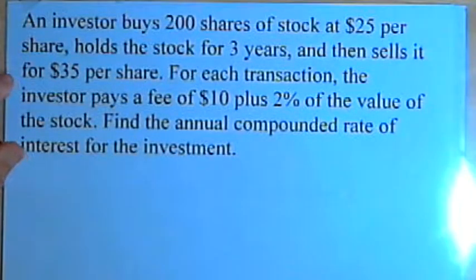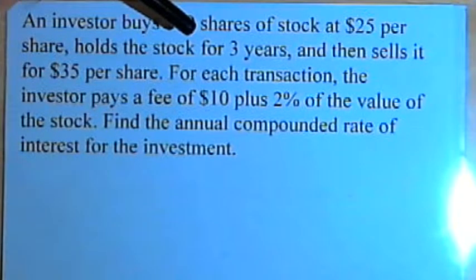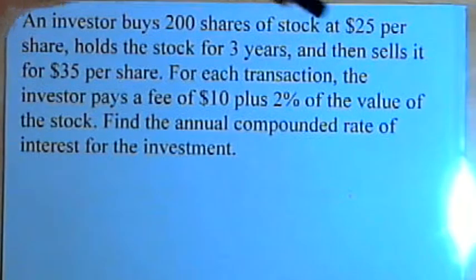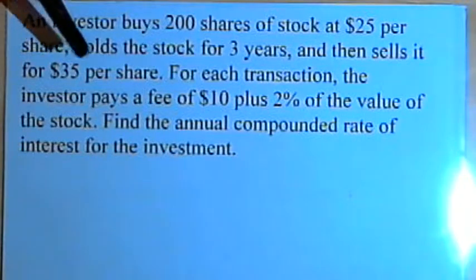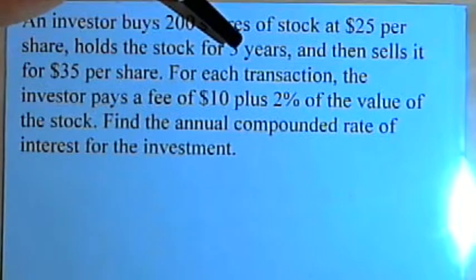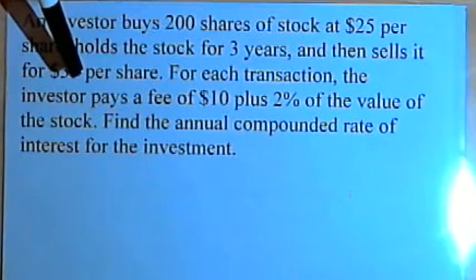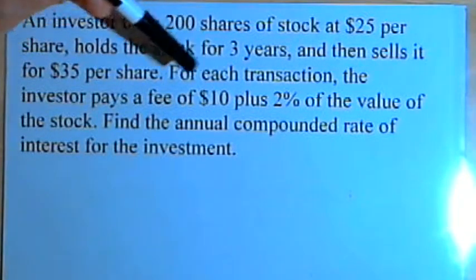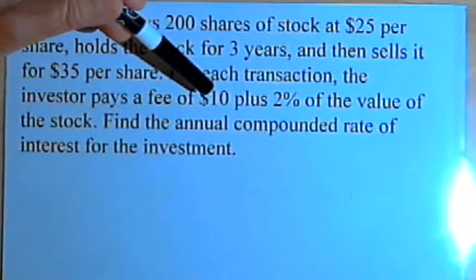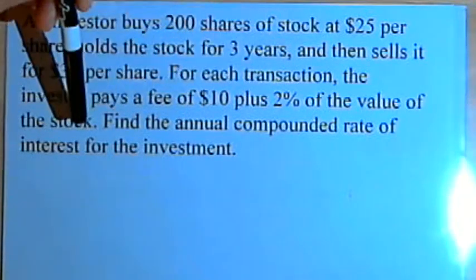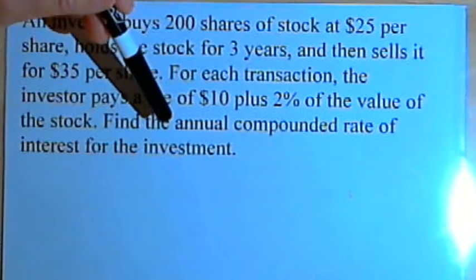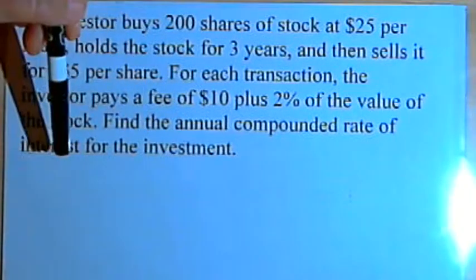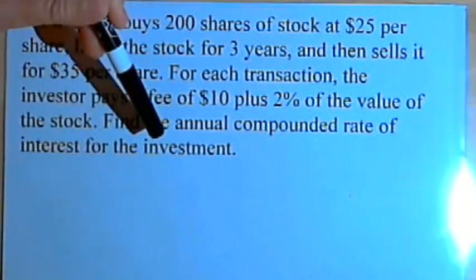Here's the problem we're going to work with. An investor buys 200 shares of stock at $25 per share, holds the stock for three years, and then sells it for $35 per share. For each transaction, the investor pays a fee of $10 plus 2% of the value of the stock. Find the annual compounded rate of interest for the investment.